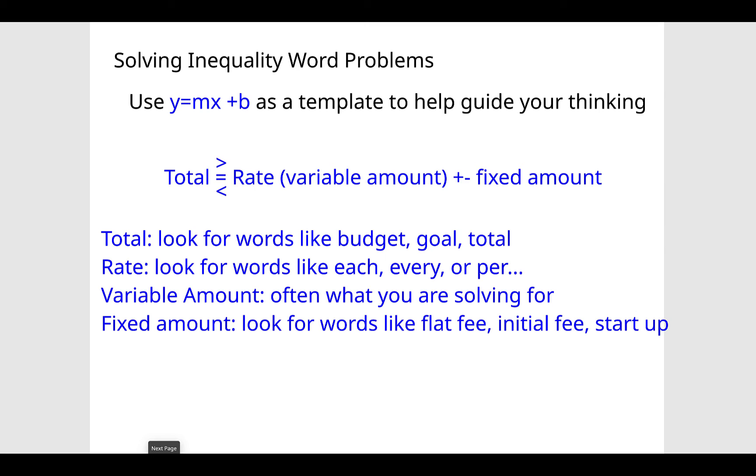So the other thing that comes up very frequently on the GED is solving inequality word problems. And I always try to have students use the template or the formula y equals mx plus b. You can use this to help guide your thinking. And the way that this works is you have the total could be equal to or greater than or less than or less than or equal to the rate, which is the slope. Slope is a rate, a variable amount, which is going to be x, plus or minus a fixed amount, which is b.